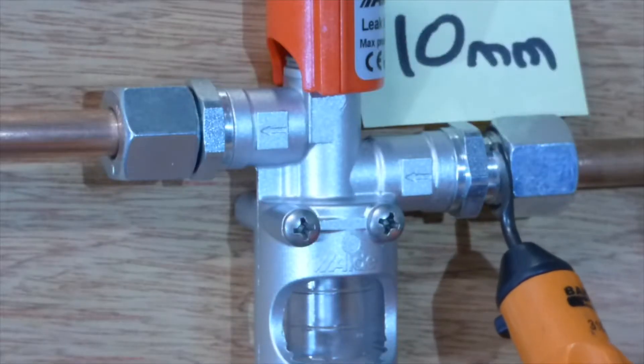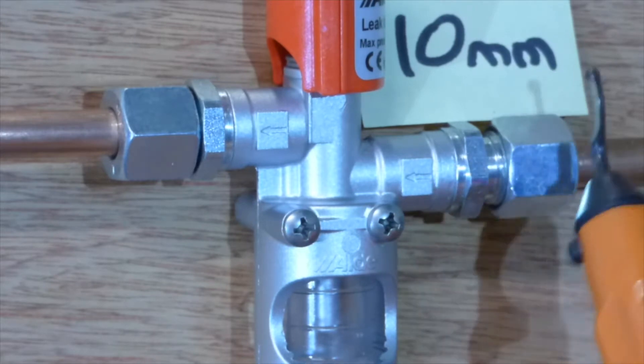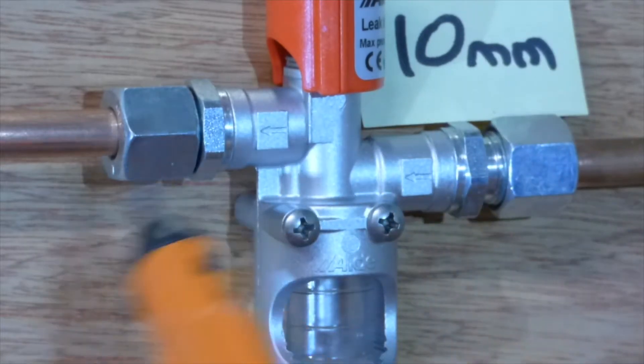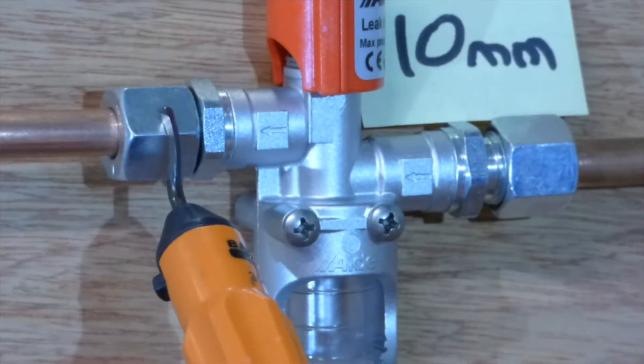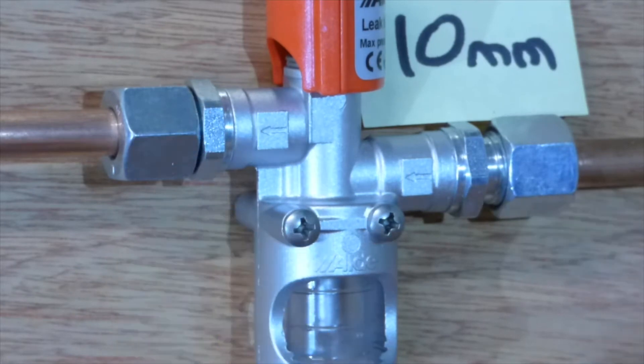This is the 10 mil. There's quite a gap there. At least 7 or 8 mil with the 10 mil coupling. Moving over to this side, I have the 3/8th pipe and the 3/8th olive. And the gap is virtually non-existent. It's quite worrying.